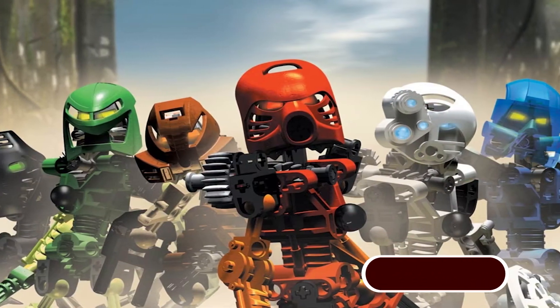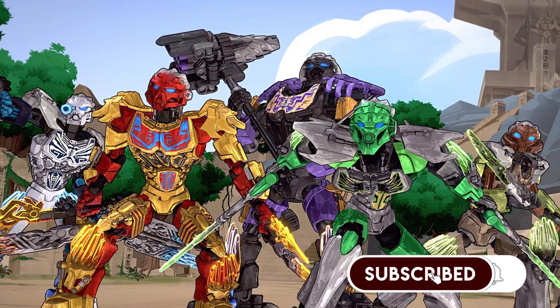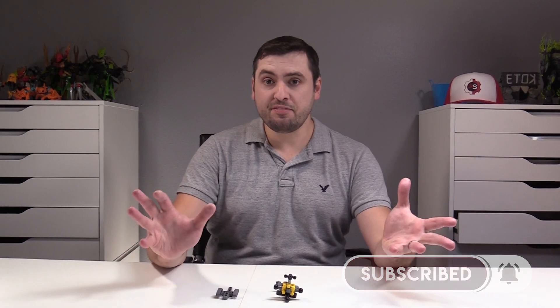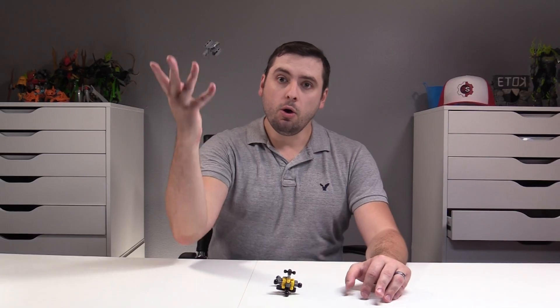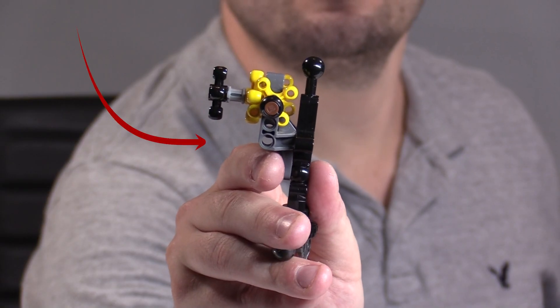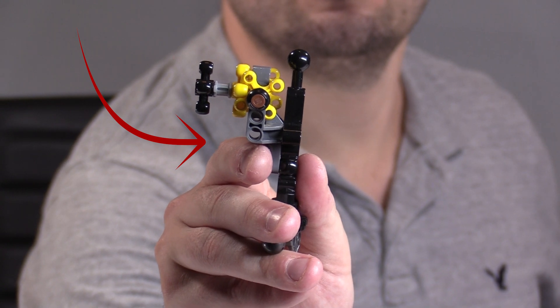Gear functions are one of the most iconic elements of Bionicle. From the Toa Mata to the 2016 Toa Uniters, play features have been a staple of our favorite toy line. But what happens if you don't have one of these specialized parts? Or what if you don't like the aesthetic of a giant backpack sitting at the back of your figure?